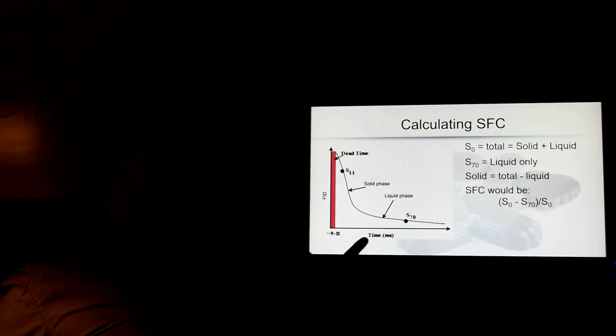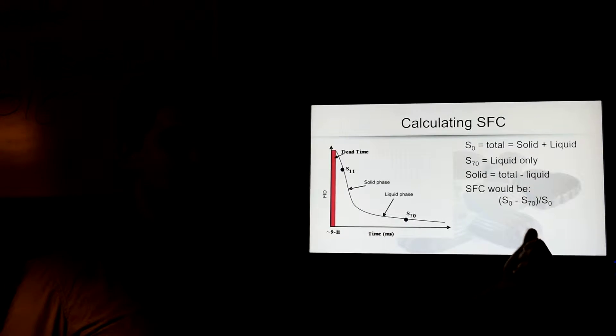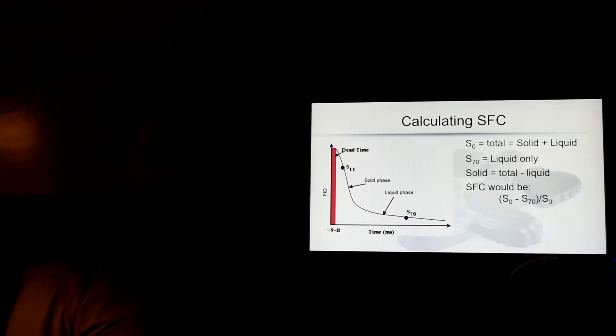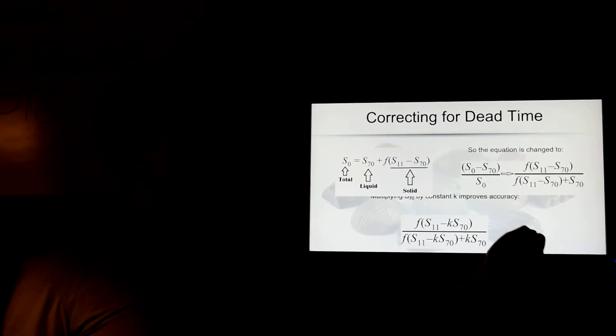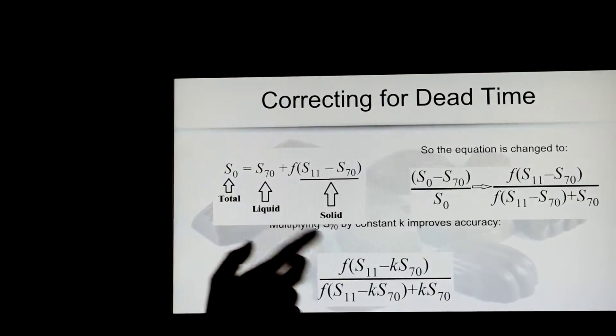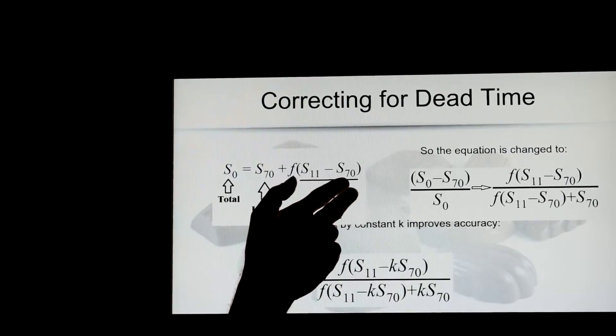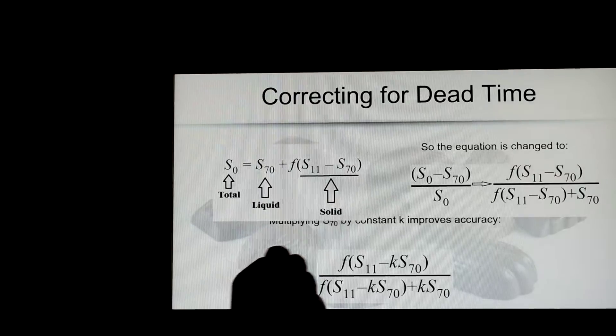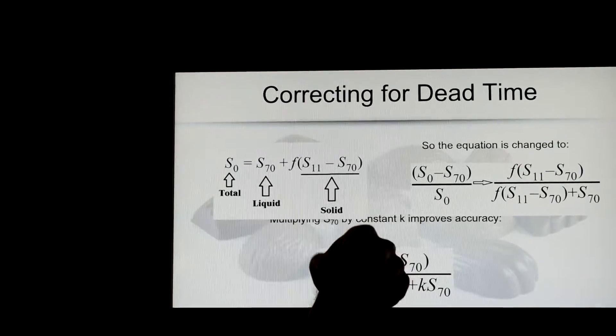So without those two issues, solid fat content would be as simple as the total minus the liquids, so the solids, divided by the total to make it a percentage. So if we look at the correction factor, we're going to replace S0 with the total, we just add liquids to solids. Solids would be total minus the liquids, and there's your correction factor.